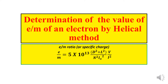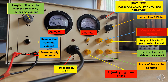In this experiment we will try to measure the value of e by m of electron by the helical method. The formula for e by m using the helical method is: e by m equals 5 into 10 to the power 13, multiplied by d squared, l squared, divided by n squared, by l x, into v by i squared.